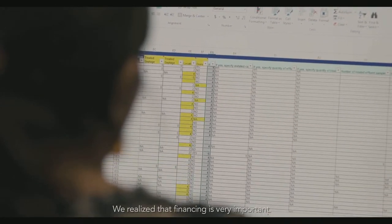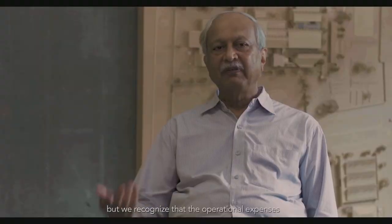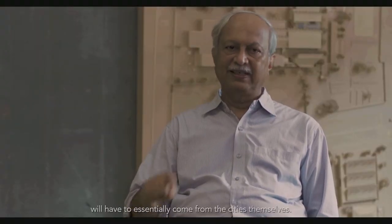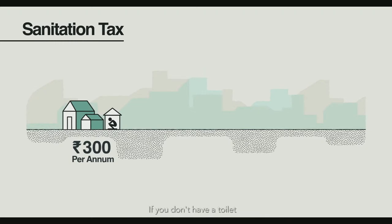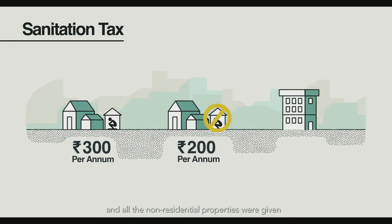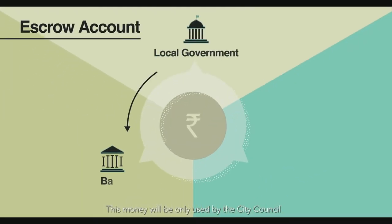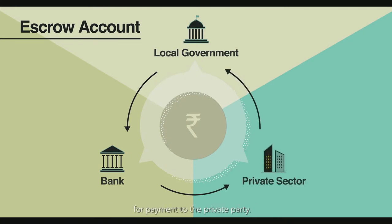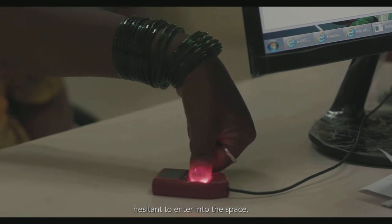Financing is very important. State government, private sector, and CSR funding from corporates cover the capital expenses, but operational expenses will have to come from the cities themselves. The council introduced a sanitation tax: toilet owners are charged around 300 rupees per year, community toilet users around 200 rupees, and non-residential properties a flat 100 rupees per year. A separate escrow account is created, and this money is used only by the city council for payment to the private party, reducing the risks that have made the private sector hesitant to enter this space.